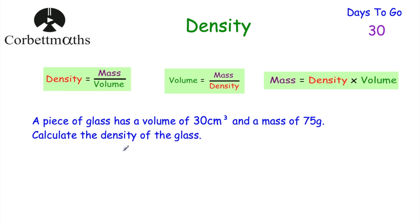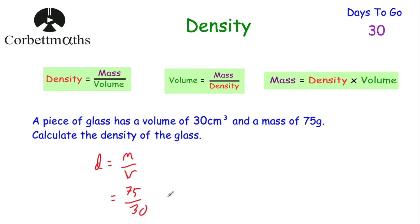Now a question for you to try. A piece of glass has a volume of 30 centimetres cubed and a mass of 75 grams. Calculate the density of the glass — press pause now and work it out. Density equals mass divided by volume: 75 divided by 30 equals 2.5. So the density of the glass is 2.5 grams per centimetre cubed — each centimetre cubed of glass is 2.5 grams. Well done if you got that.